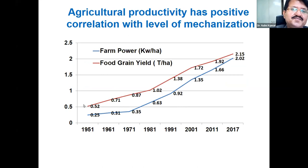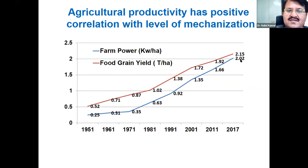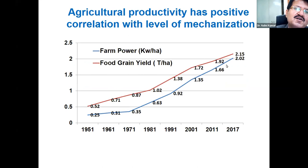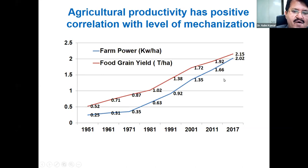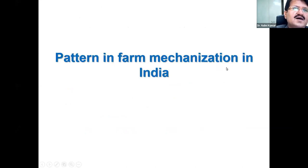Here, the red line indicates food grain yield in tonnes per hectare and the blue line indicates the level of farm power energy equal to 1.5 kW per hectare. This clearly indicates that as farm power energy increases, food grain yield also increases — there is a clear correlation.